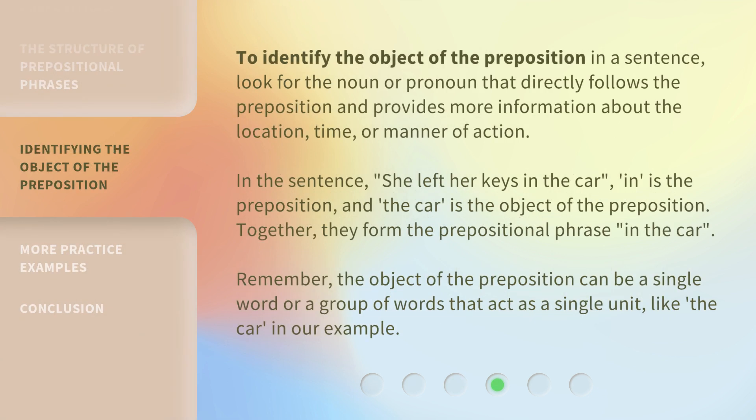To identify the object of the preposition in a sentence, look for the noun or pronoun that directly follows the preposition and provides more information about the location, time, or manner of action. In the sentence "she left her keys in the car," "in" is the preposition and "the car" is the object of the preposition.